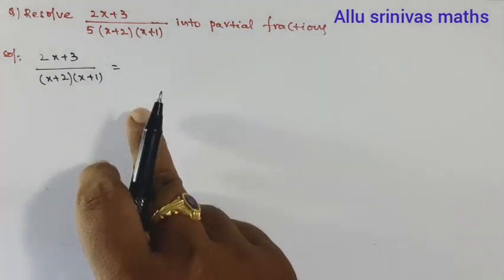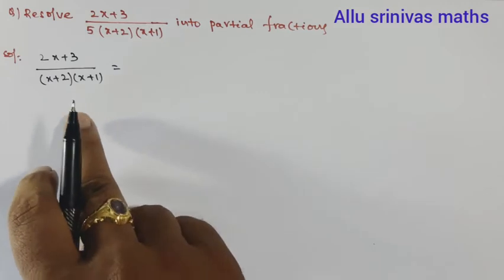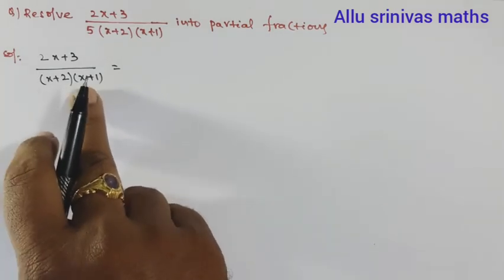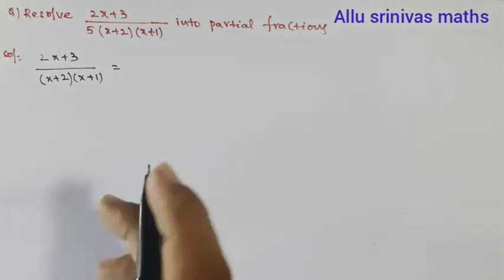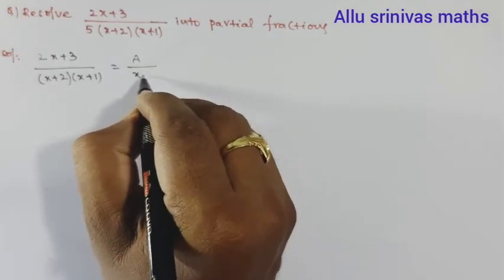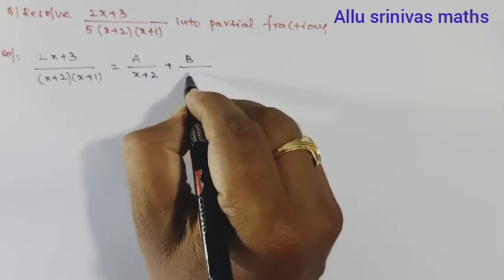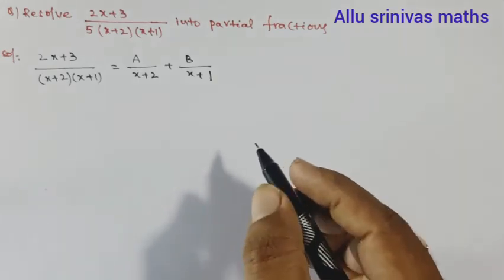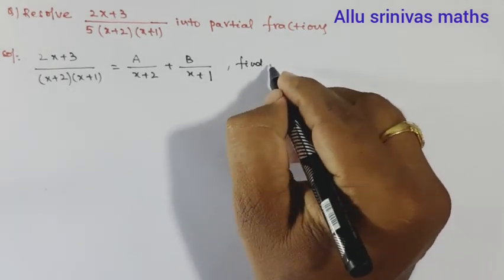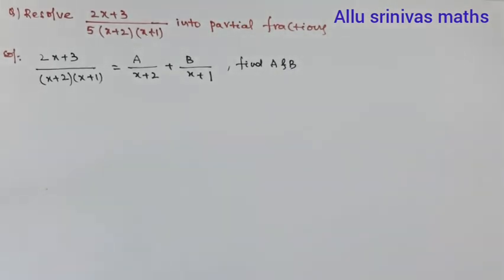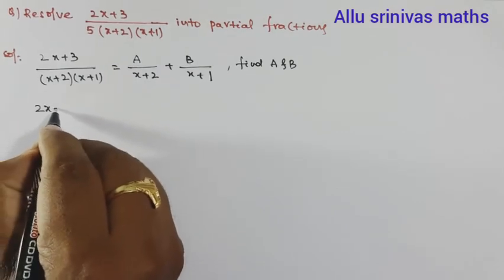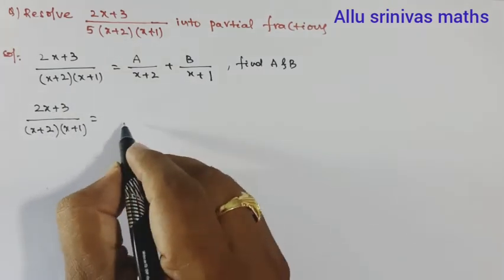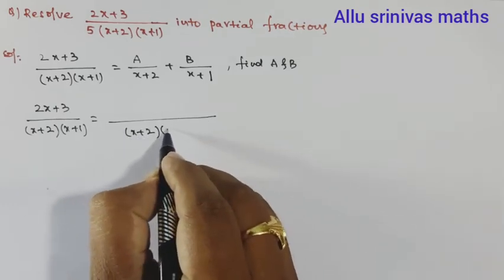Since the denominator has two non-repeated irreducible linear factors, each linear factor has one partial fraction of the form A/(x + 2) + B/(x + 1), where A and B values are to be determined. Writing (2x + 3) / [(x + 2)(x + 1)] and taking the LCM of the two fractions, the LCM is (x + 2)(x + 1), giving A(x + 1) + B(x + 2).